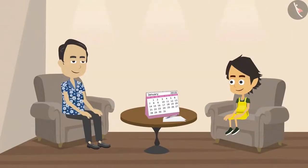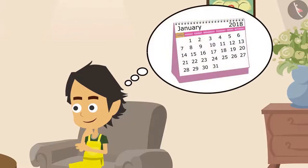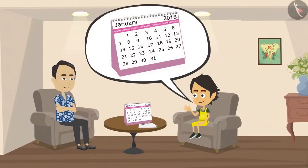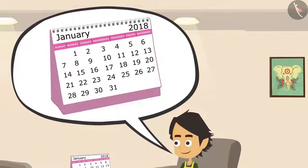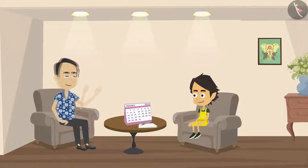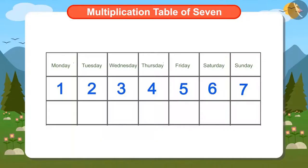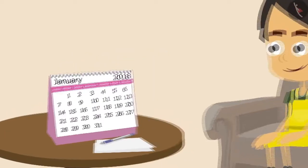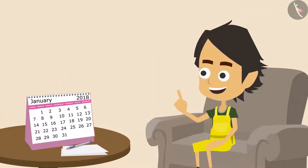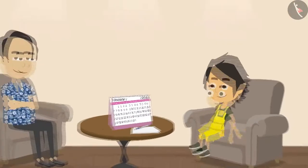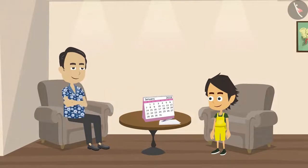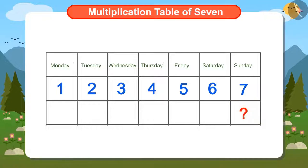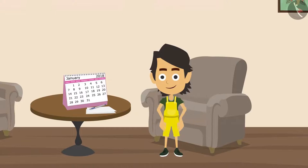Papa asks Ayushman, what is the date today? Ayushman waits the whole week for Sunday, so it is easy for him to remember that today the date is 7th and the day is Sunday. Ayushman's father asks one more question: if today the date is 7th and the day is Sunday, which will be the date on next Sunday? This can be answered immediately by looking at the calendar, but Papa wants Ayushman to tell next Sunday's date without looking at the calendar. Can you help Ayushman get the answer?